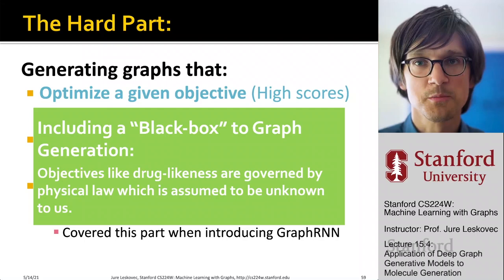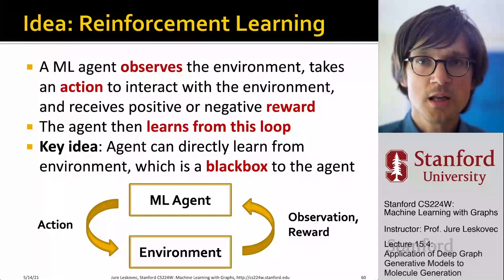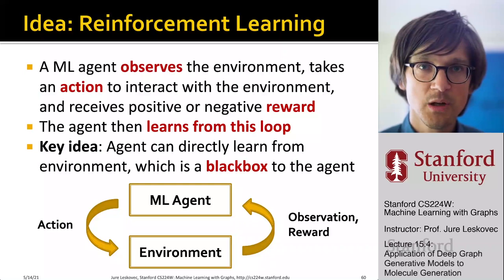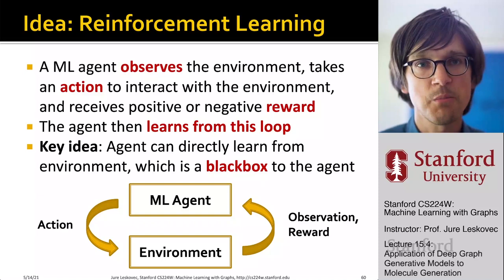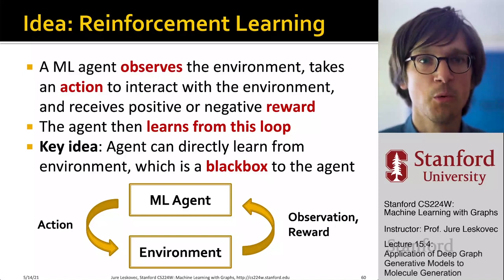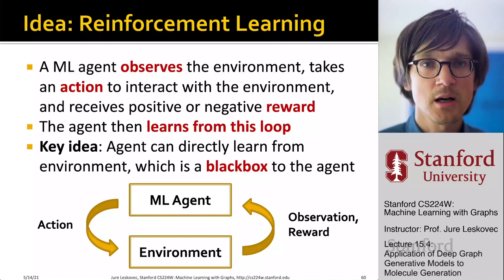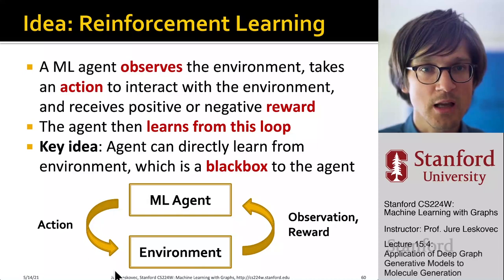So how are we going to do this? We are going to cast it as a reinforcement learning problem. The way we formalize it is that we have a machine learning agent that observes the environment, takes an action to interact with the environment, and then receives a positive or negative reward. The agent wants to learn from this loop. The key idea is that the agent can directly learn from the environment, which is a black box to the agent. The agent takes actions, interacts with the environment, and the environment gives back some feedback — some rewards.